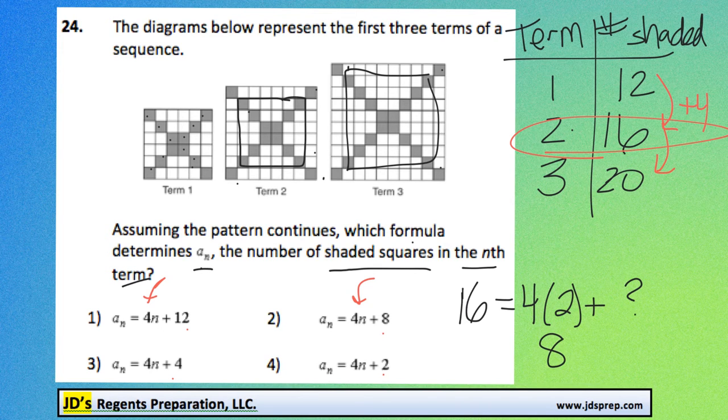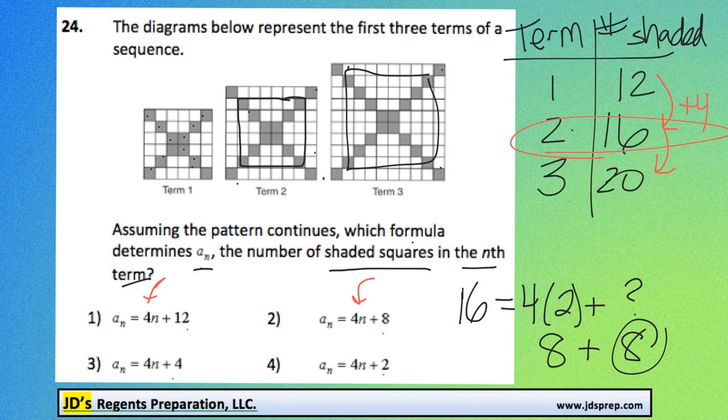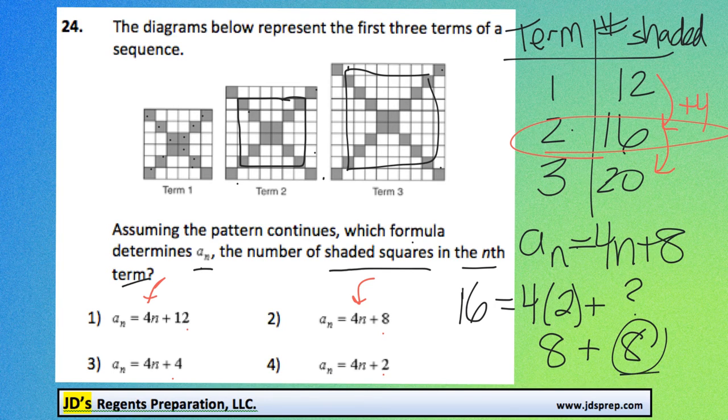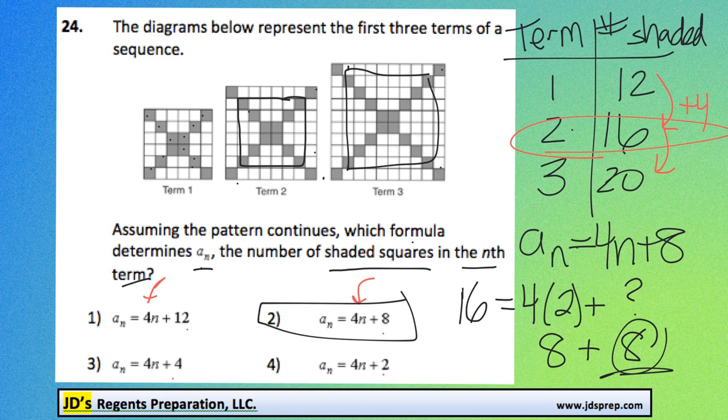And of course 4 times 2 is 8, and 8 plus 8 will get us 16. So we can see that the correct answer would be a sub n equals 4n plus 8, which is option number 2.